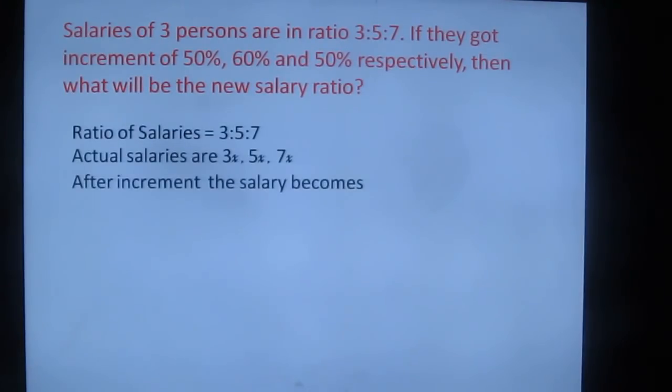Then what you have to do is, as I said in the previous slide, 50% increment is nothing but 1.5. So 3 times 1.5, 5 times 1.6, and 7 times 1.5. What is 3 times 1.5? 4.5. What is 5 times 1.6? 8. What is 7 times 1.5? 10.5. So you will get the answer as decimal in some cases.